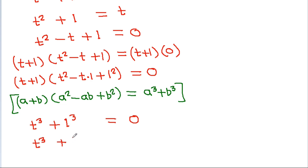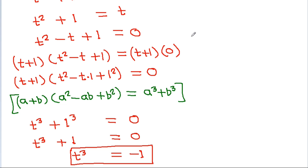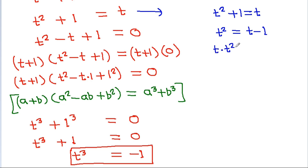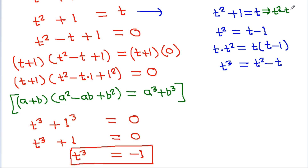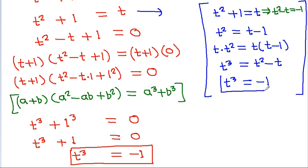And it is t cube minus 1 is equal to 0, so t cube will be equal to minus 1. Also, from t squared minus t minus 1 equals 0 we have t squared plus 1 equal to t, so t squared equals t minus 1. Then t times t squared equals t times t minus 1, so t cube equals t squared minus t, and from t squared minus t equals minus 1, we confirm t cube is equal to minus 1.